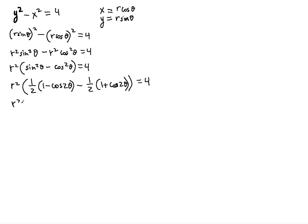Expanding, we get one half minus one half, which equals 0, so those constants cancel. Then we have negative one half cosine 2 theta minus another negative one half cosine 2 theta, giving negative cosine 2 theta. So r squared times negative cosine 2 theta equals 4.